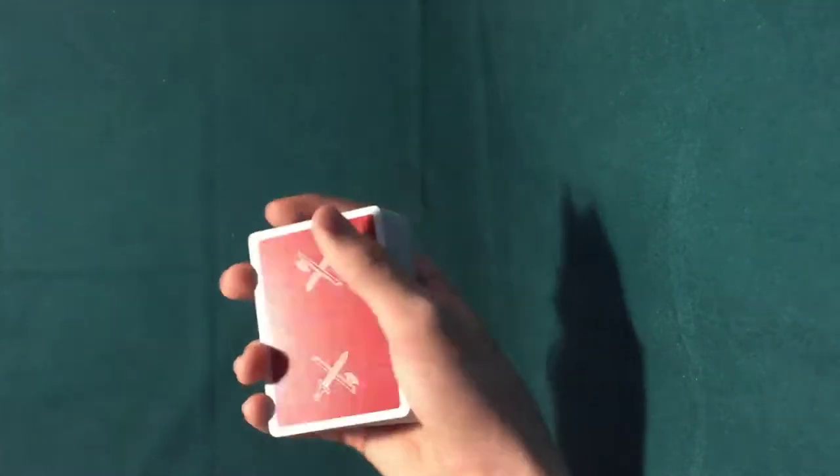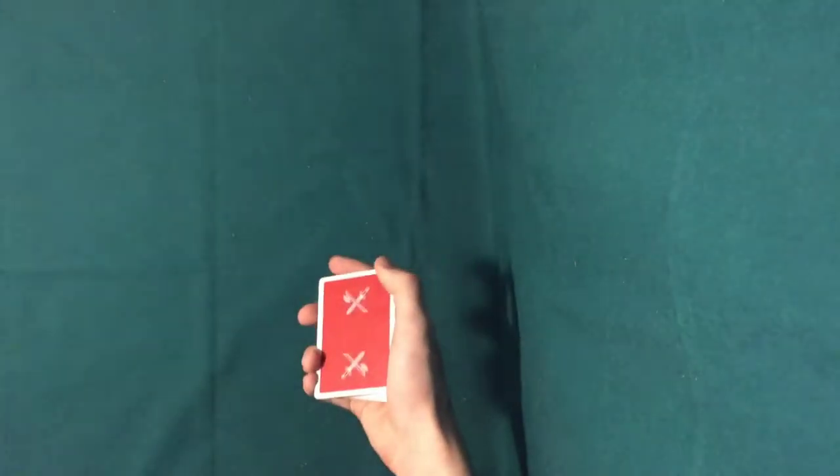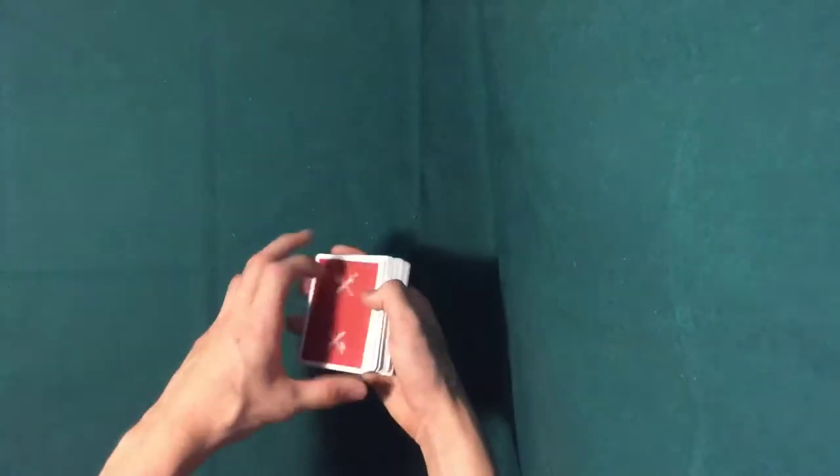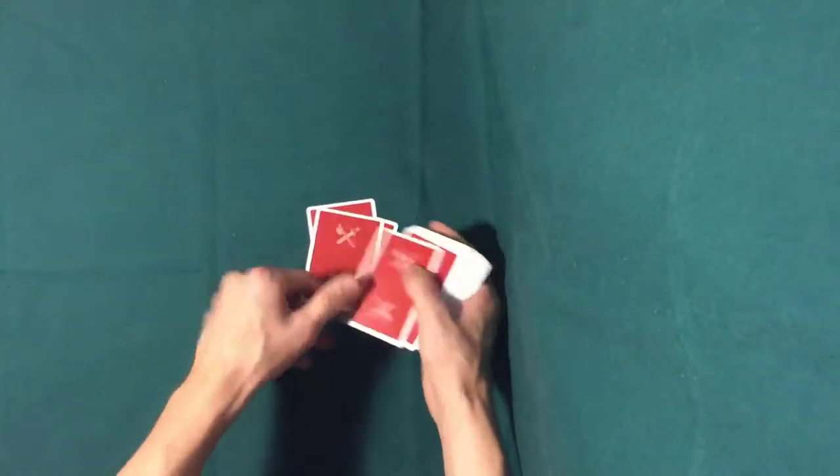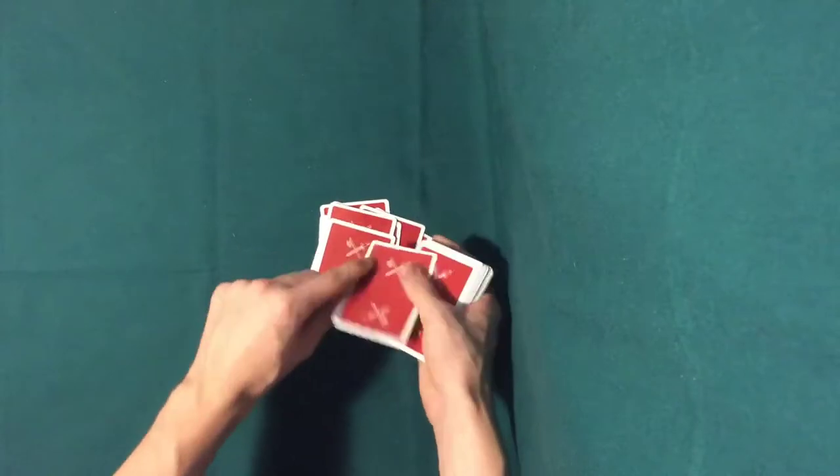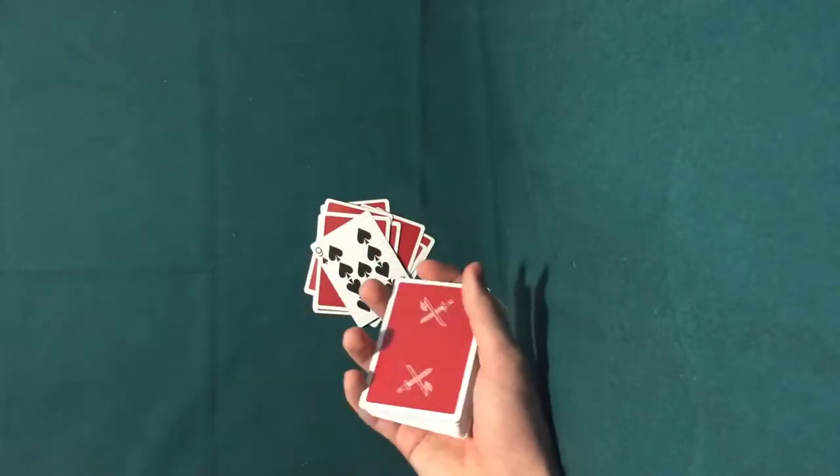In this case, the spectator would say the nine of spades. I'll show you soon how I was able to figure that out. So they would tell me the nine of spades, and I would go N-I-N-E-O-F-S-P-A-D-E-S. There we go, nine of spades. And that's the trick, and stick around for the tutorial.